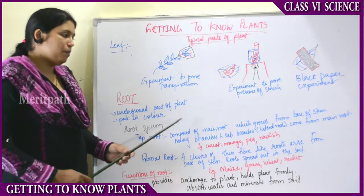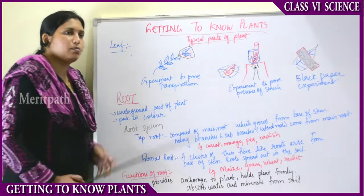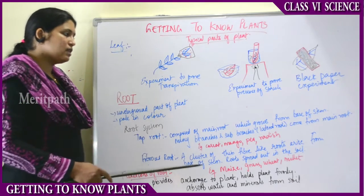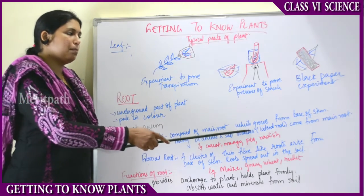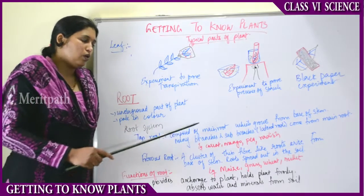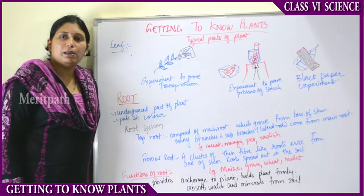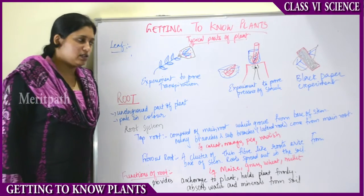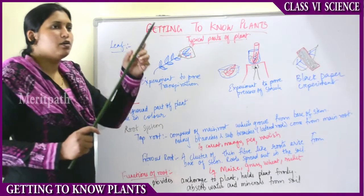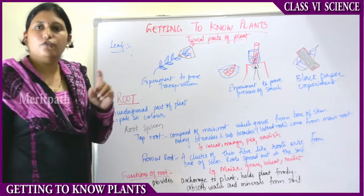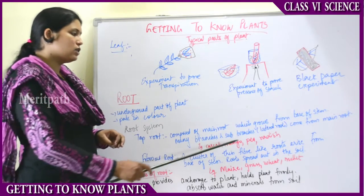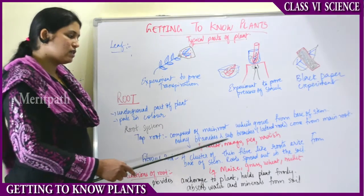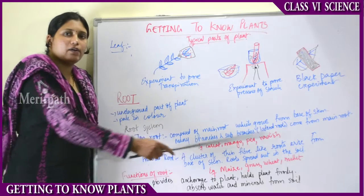Tap root is composed of a main root that grows from the base of the stem. From this tap root, many branches and sub-branches arise called lateral roots. So the stem continues into the ground as a main root, and from this main root many lateral branches arise. This type of root system is seen in carrot, mango, pea, and radish plants.